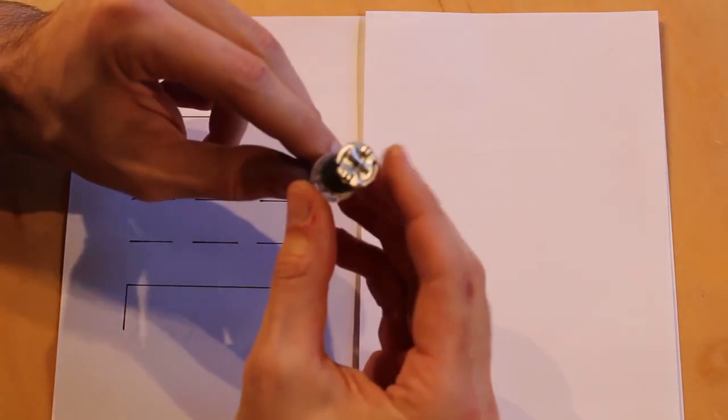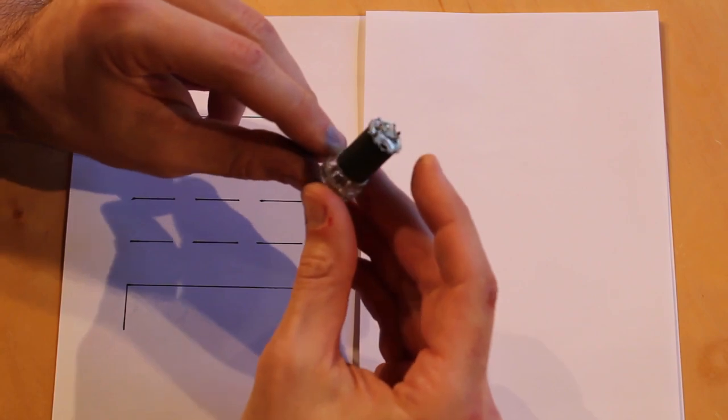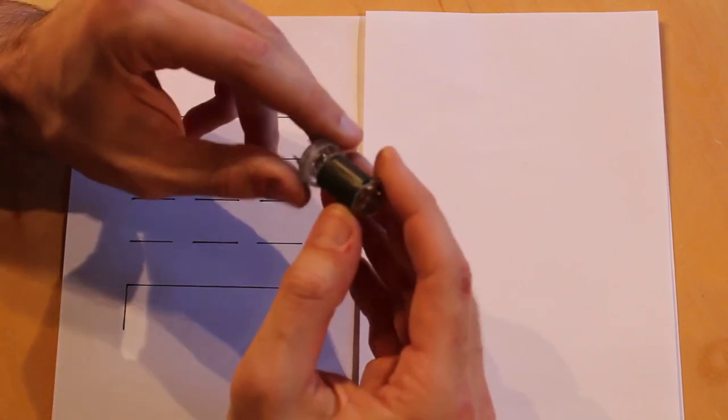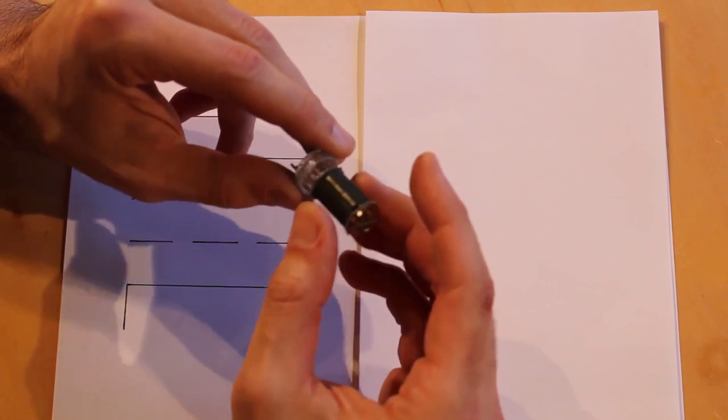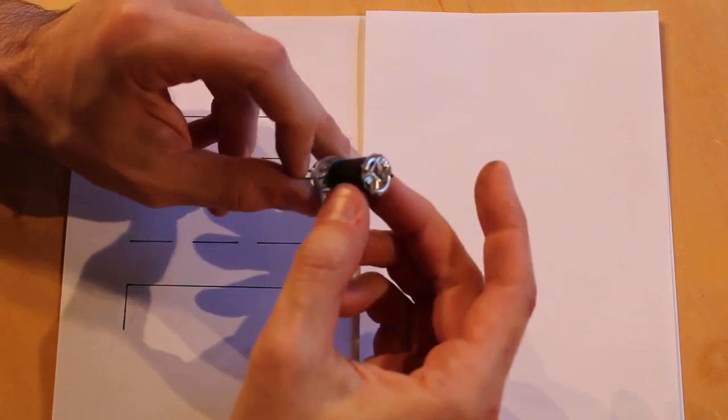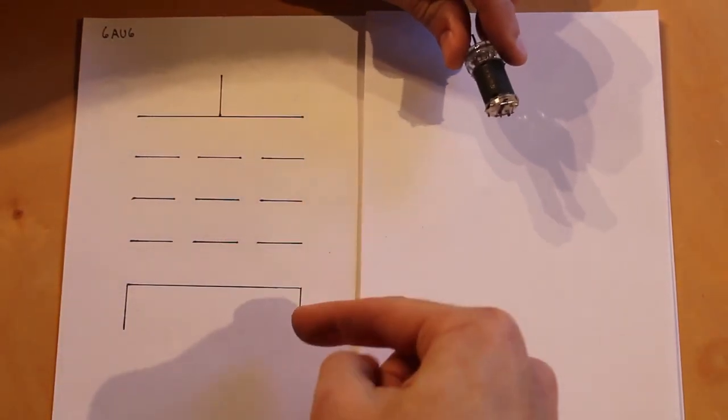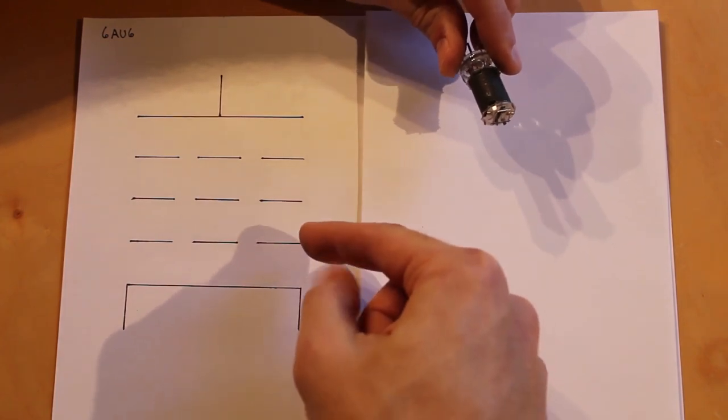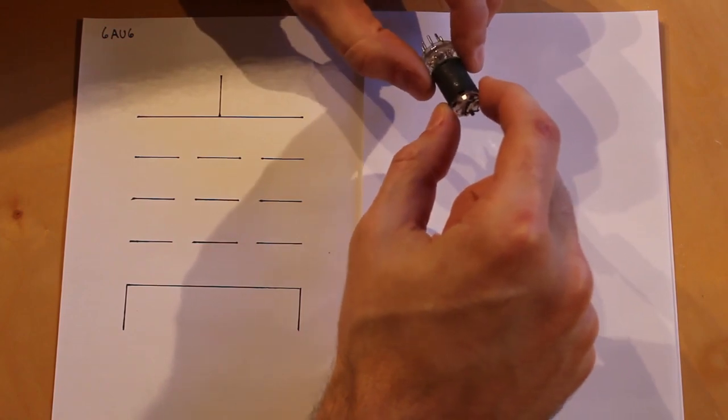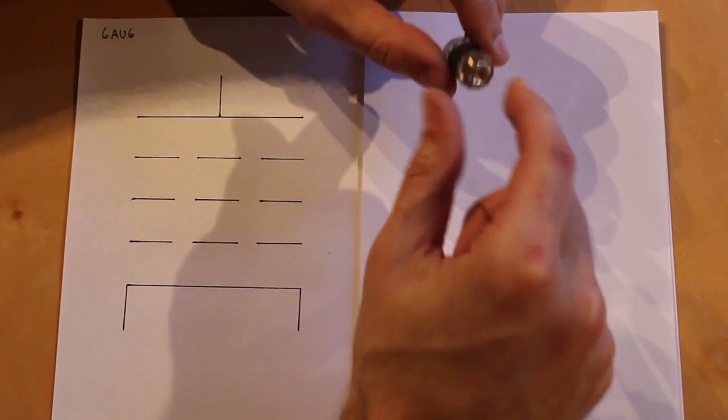This is the 6AU6 pentode. This is probably my favorite tube to build circuits with partially because it performs really well but also I just think that this dark plate around the outside looks really cool. So let's see if we can trim off this top piece here and slip the plate off and take a look at the grids on the inside. We should be able to see the cathode, the control grid, screen grid, and suppressor grid all wrapped around this one. So this is going to be like that 1A5GT but a lot more compact.